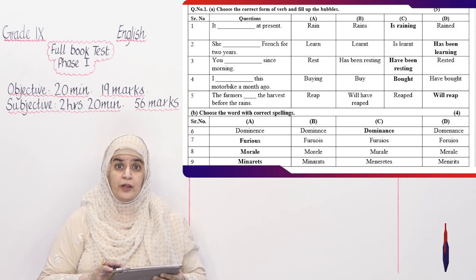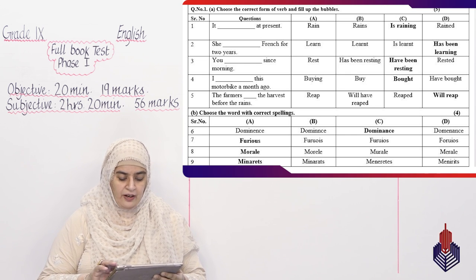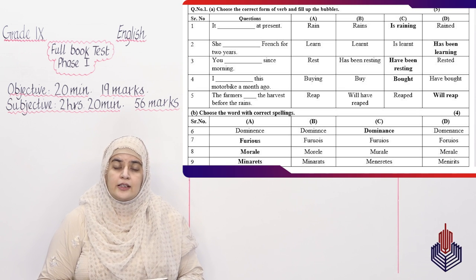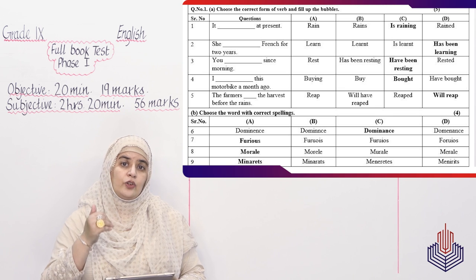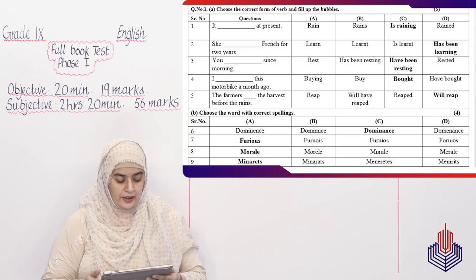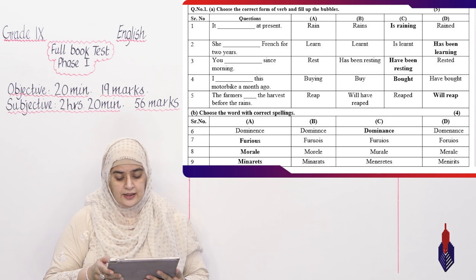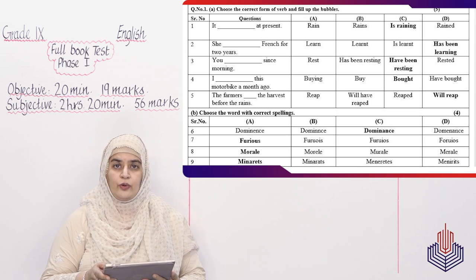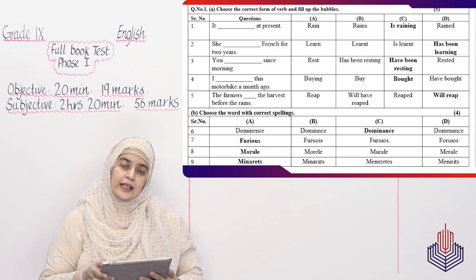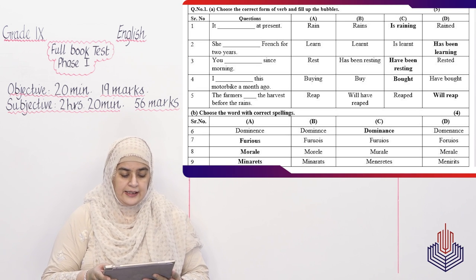MCQ number five: The farmers - the harvest before the rains. Reap, will have reaped, reaped ya will reap. The signs are telling that the rain is coming. So your answer will be in future tense. Agar wo rain aegi to the farmers will reap. Option D is the right answer. Next set of MCQs is asking you to tell the correct spelling. Yaha par ham jo spelling aapke liye laaye hain, wo hai dominance aur uski correct spelling. Option number C is D-O-M-I-N-A-N-C-E. Next is furious. Option number A: F-U-R-I-O-U-S. After that is morale: M-O-R-A-L-E. Option A is the correct answer. And after that is minarets. Option number A: M-I-N-A-R-E-T-S is the right answer.